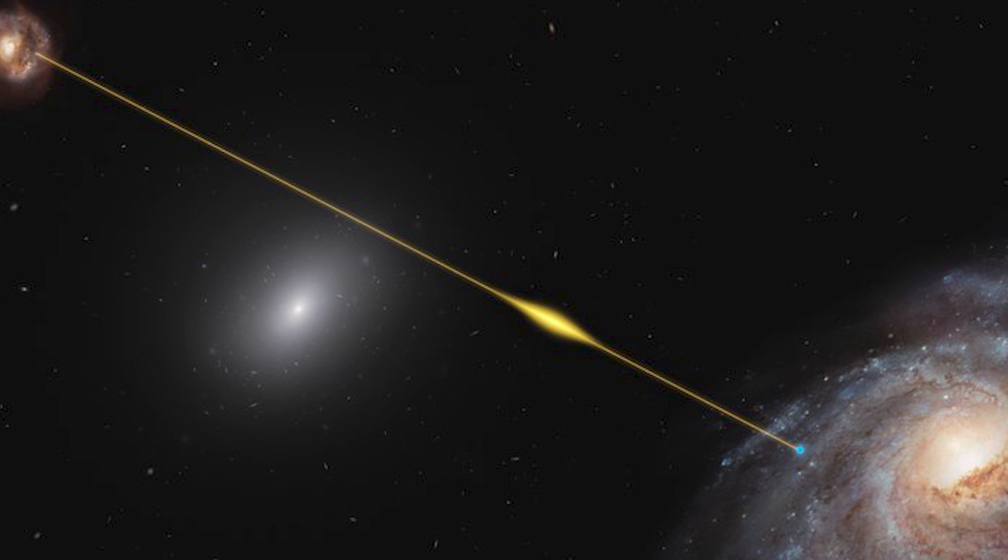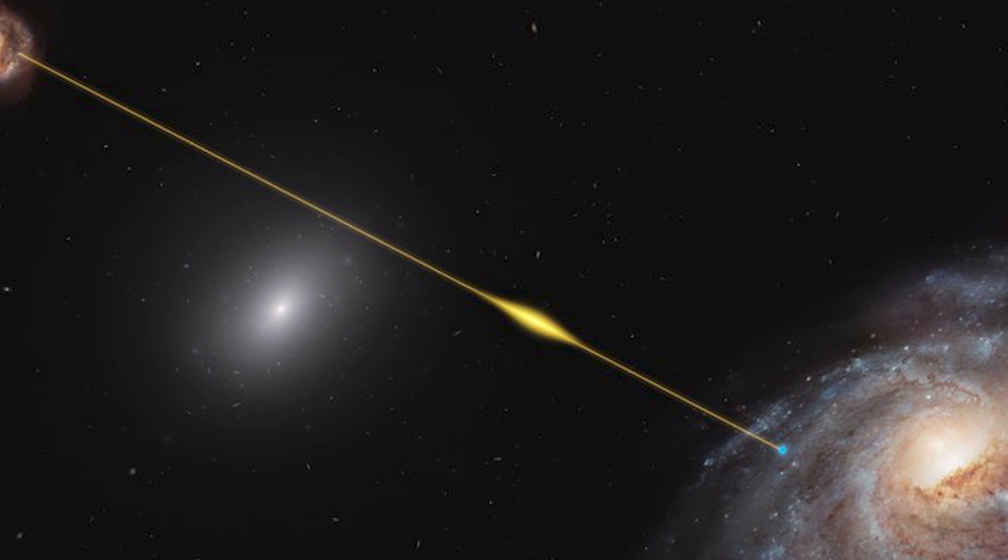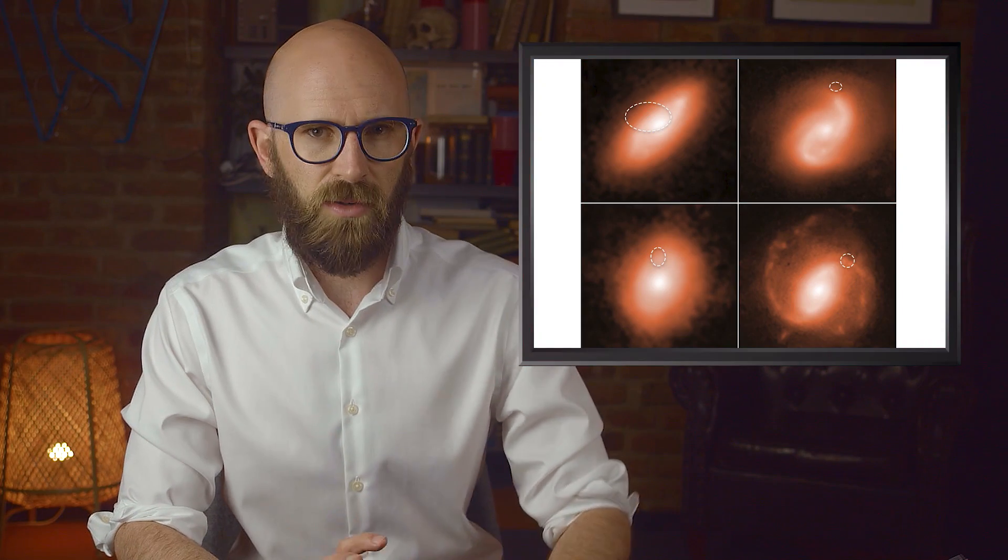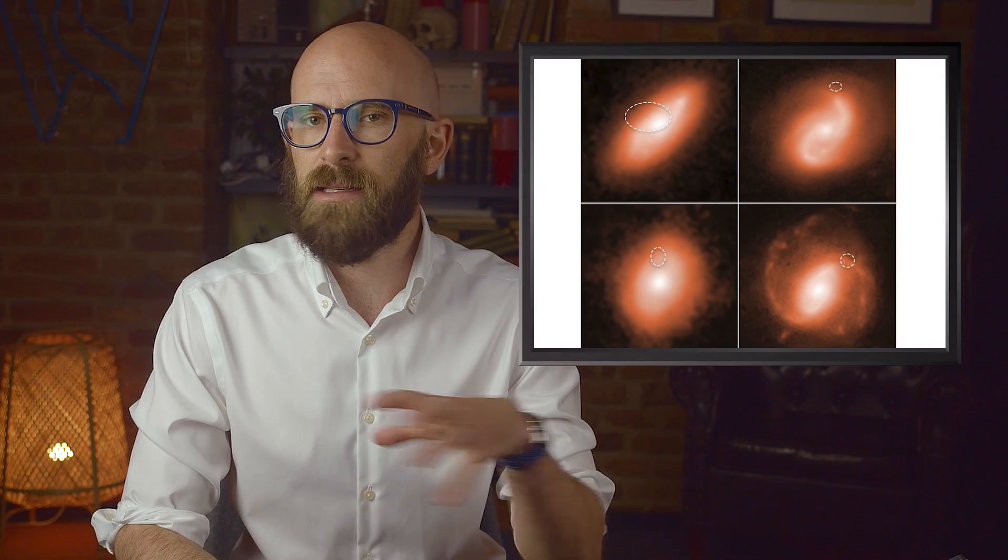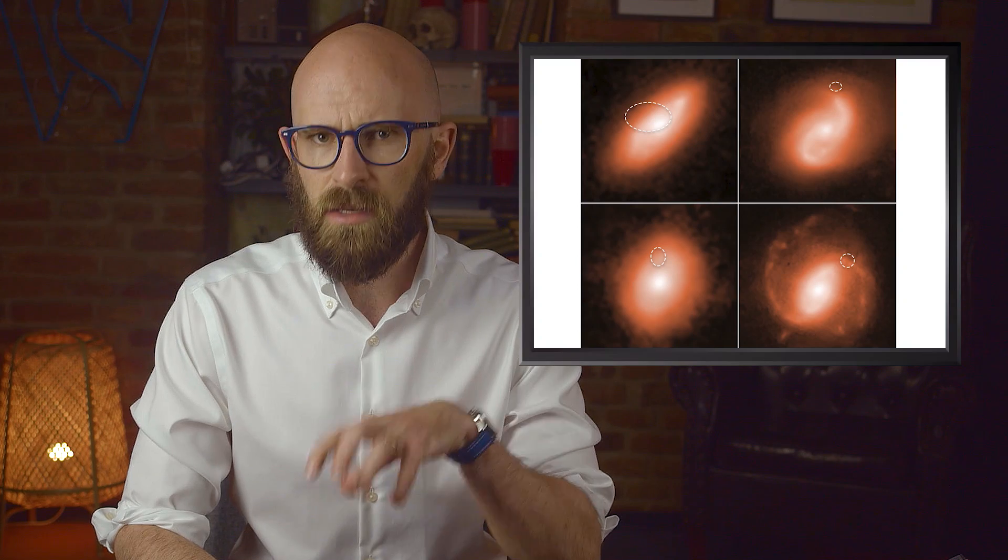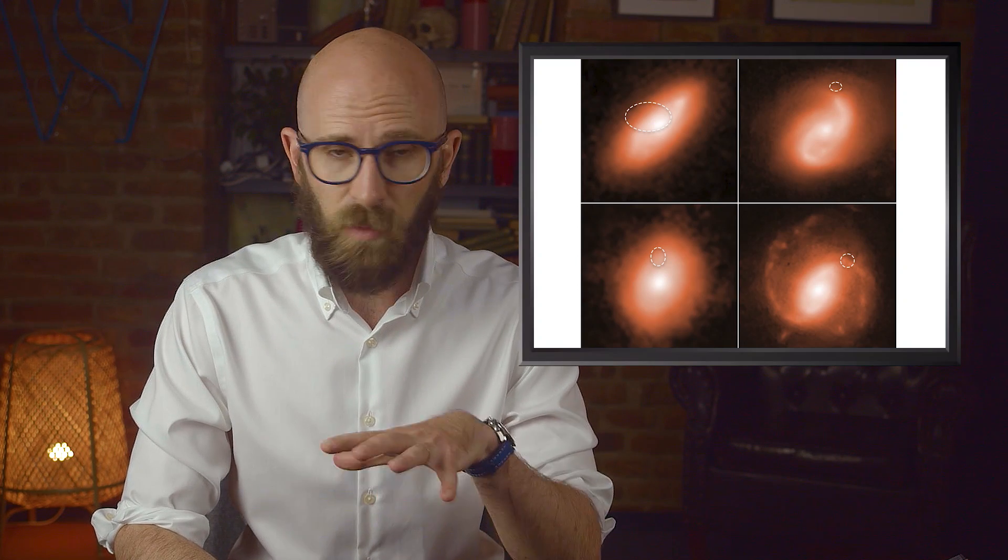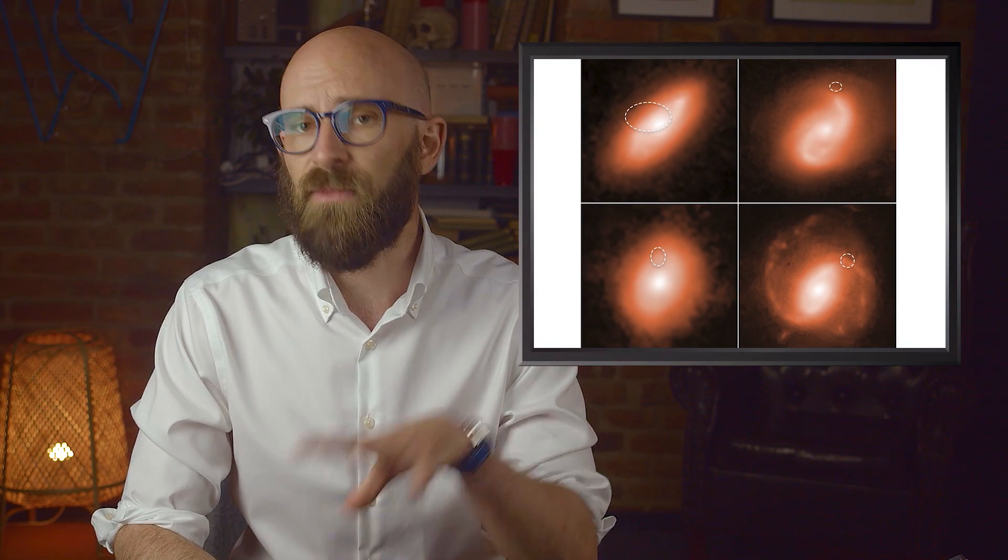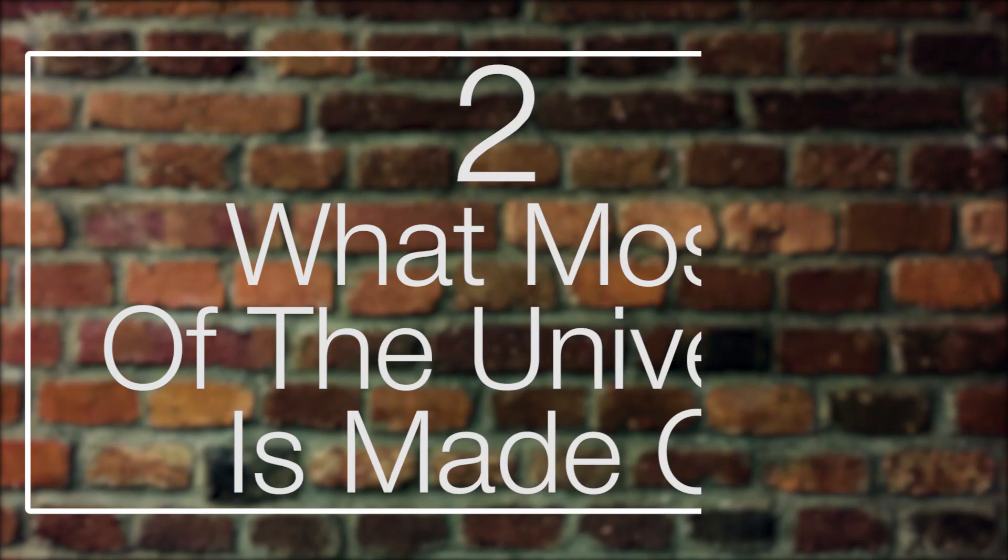A single burst that lasts less than a millisecond can produce as much energy as the sun will over several days. In 20 years, scientists have observed about 1,000 of these bursts. Only 15 have been traced back to the galaxy where they came from. The popular theory is that the bursts may be caused by magnetars, the highly magnetic corpses of dead stars, but for now that remains just a theory.